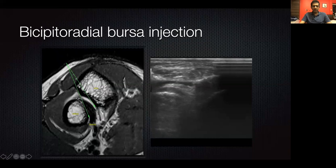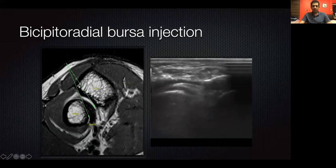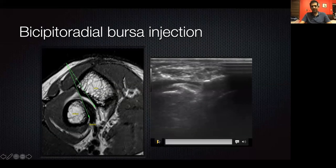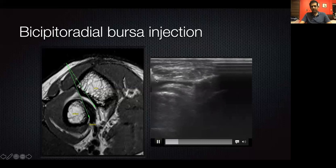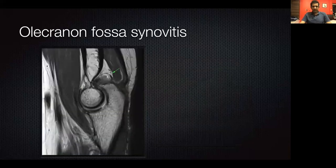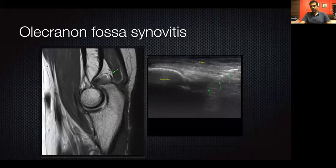For bicep radial bursal injections, place the transducer over the dorsal aspect of the proximal forearm, get into the space between the radius and ulna, and inject along the biceps radioradial bursa. For olecranon fossa synovitis, you can approach longitudinally through the triceps or mediolaterally to inject into the olecranon fossa.